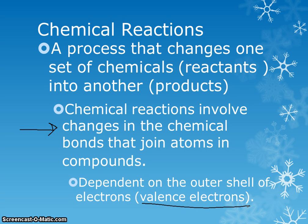We learned about that with carbon and with oxygen. They want to have that valence shell full, and they will give away electrons, take on extra electrons, or share electrons to make sure that outer shell gets full. So that's what chemical reactions are — changing reactants into products by rearranging chemical bonds.